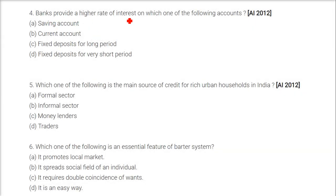Banks provide a higher rate of interest on which one of the following accounts? The answer is fixed deposits — FD — for a long period.